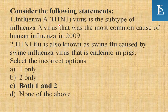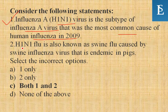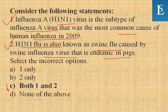Influenza A H1N1 virus is the subtype of influenza A virus that was the most common cause of human influenza in 2009 — this is correct. H1N1 flu is also known as swine flu, caused by the swine influenza virus that is endemic to pigs — this is also correct. So we go with option C: both statements one and two are correct.